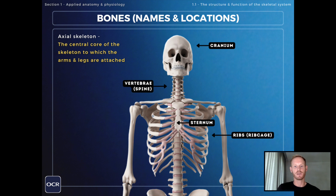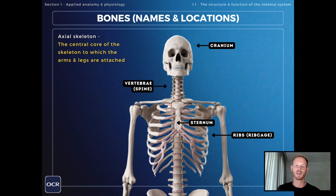Let's make a start on the names and locations of the major bones. We'll begin with the bones of the axial skeleton, which is the central core of the skeleton to which the arms and legs are attached. The bones that make up the axial skeleton are the cranium or skull, the vertebrae — individual bones which sit on top of one another to form the spine or vertebral column — the sternum or breastbone, and the ribs which make up the ribcage.